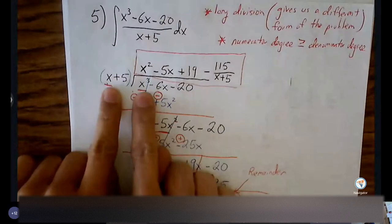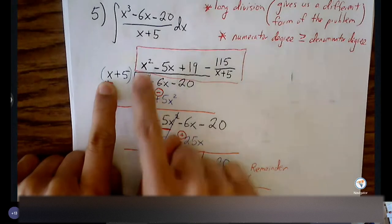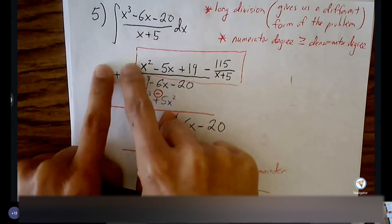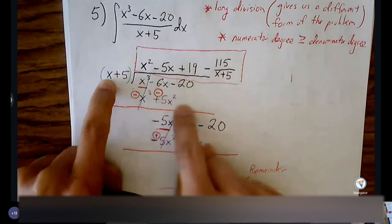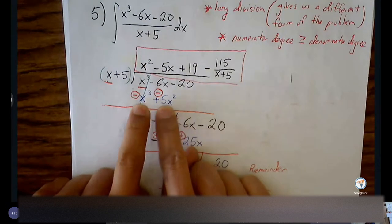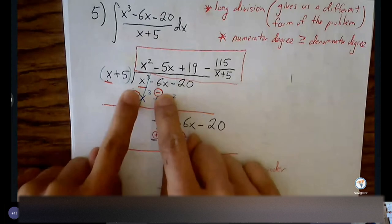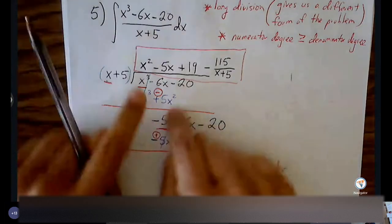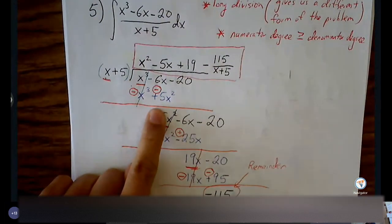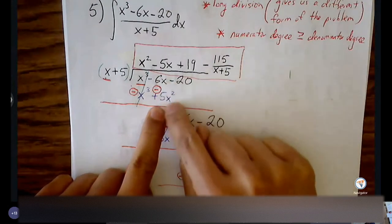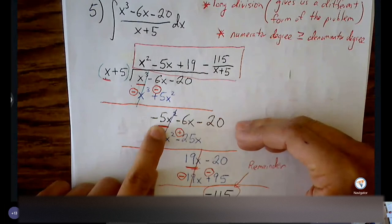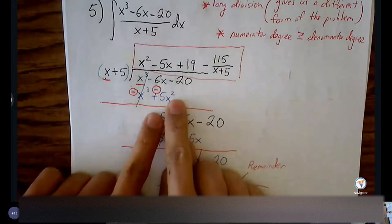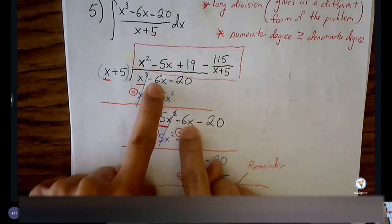We do see that relationship here, so we can move forward with long division. We write it in the standard form, match our terms. X times what gives me x cubed? It's x squared — we find the first term of our quotient, then distribute through our divisor. It helps to put parentheses around your divisor. When you multiply and distribute through, write your terms below, draw your line, change your signs, and your first term will always match and cancel out.